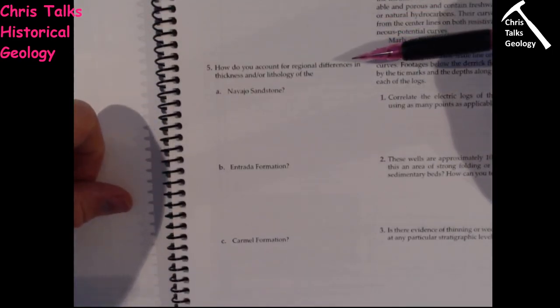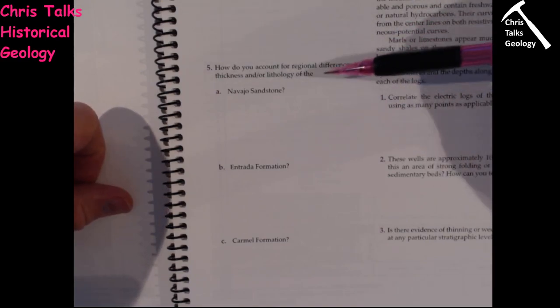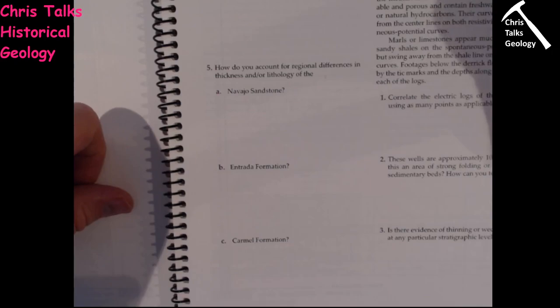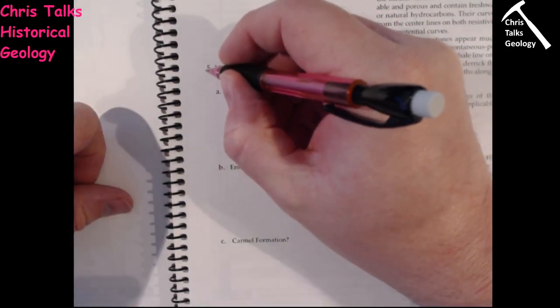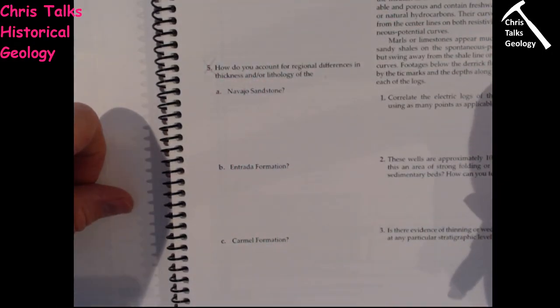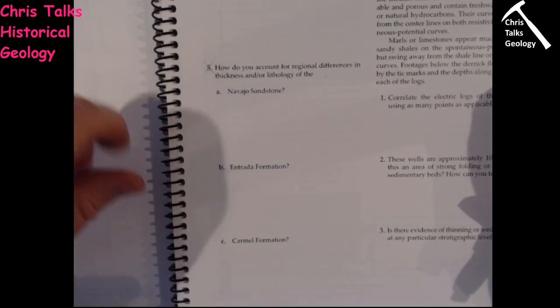Question 5 asks how you account for regional differences in thickness. This would be much easier to answer with diagrams on a whiteboard in person. Because we don't have those facilities available, let's just avoid Question 5 — it'll make our lives just that little bit easier.